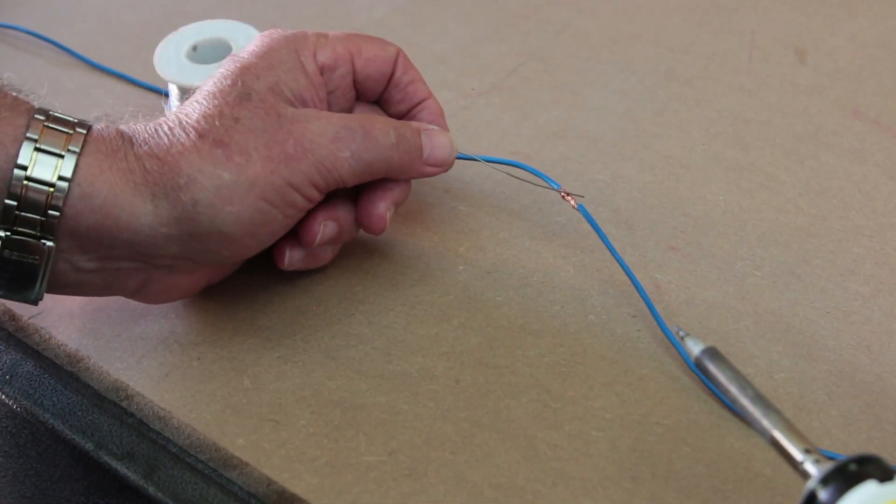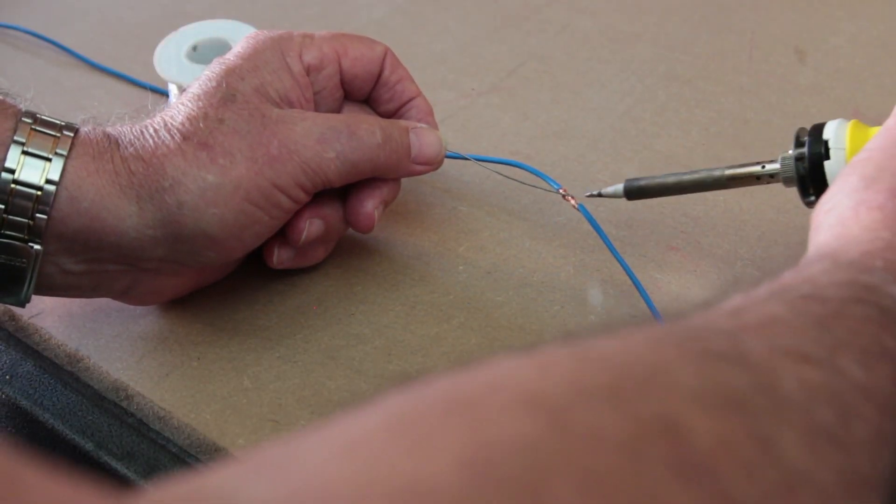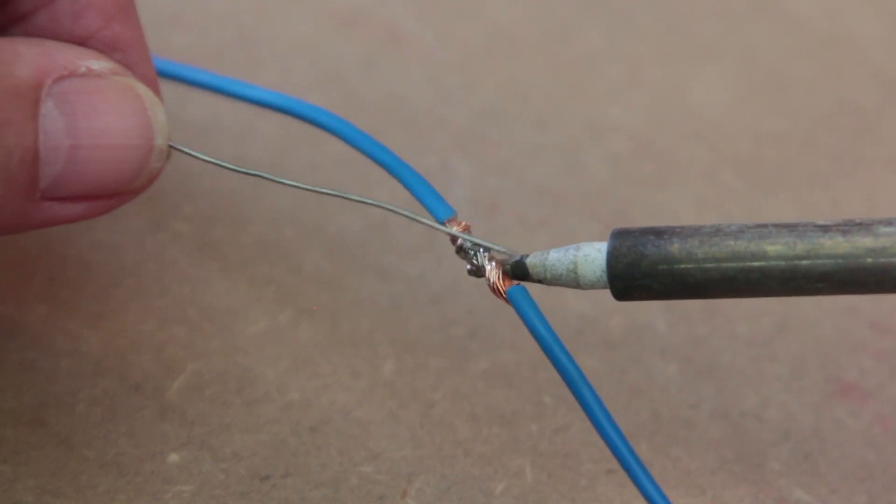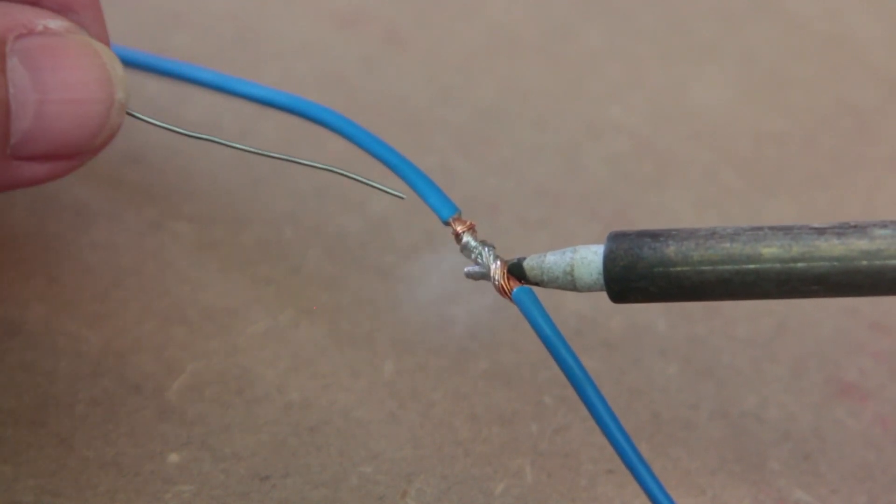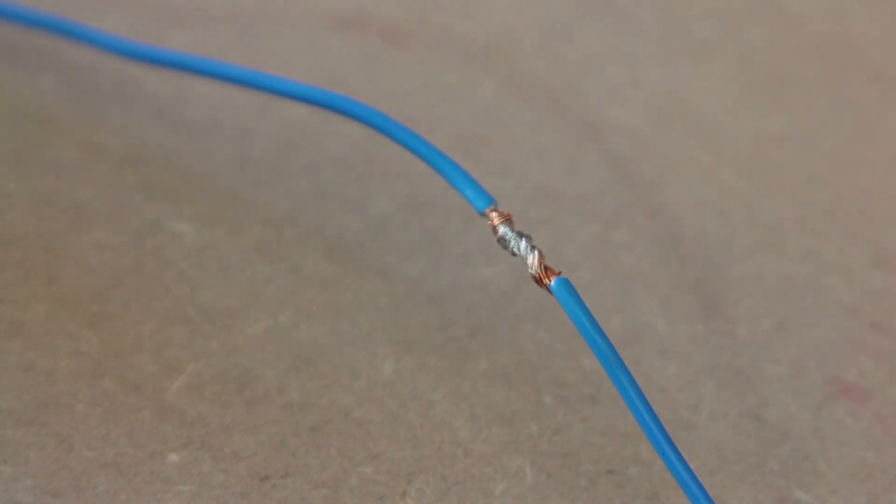With the soldering iron heated up, sit the end of the solder over the joint. Apply heat until the solder has flown through the joint. If the solder will not flow through, then more heat will be required. Without moving it, let the joint cool.